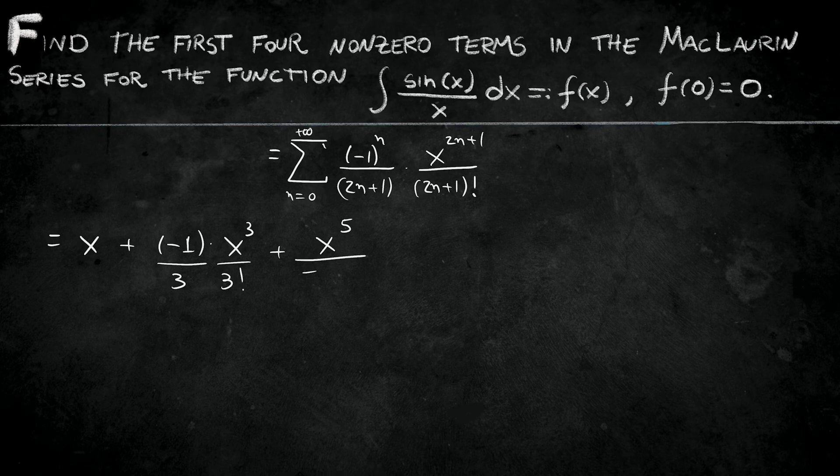What do we have to do next? Let's plug the third term, that's the number 2. Plugging in 2, you have minus 1 to the power 2, x to the power 5, over 5 over 5 factorial. And minus 1 to the power 2 is just 1.